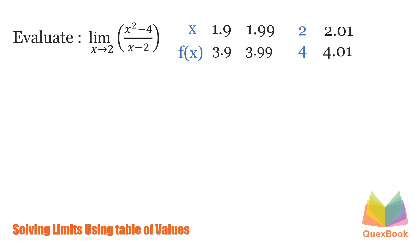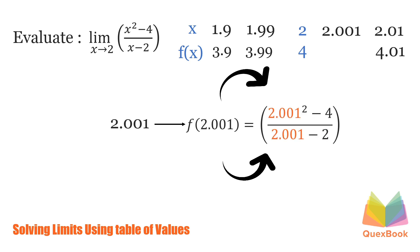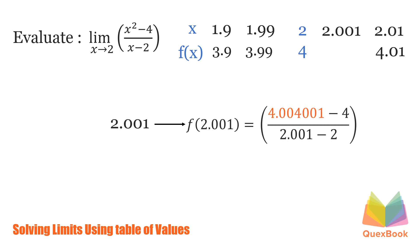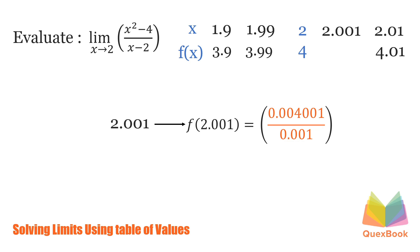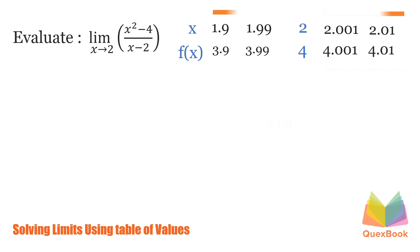Another number much closer to 2 — let's try 2.001. Let us evaluate: 2.001 squared minus 4 over 2.001 minus 2. 2.001 squared is 4.004001, minus 4 is 0.004001. 2.001 minus 2 is 0.001. Dividing the function, we'll have 4.001. Likewise, there's still a pattern that as our x approaches 2, the limit of our function gets closer and closer to 4. So the answer for this problem is 4.